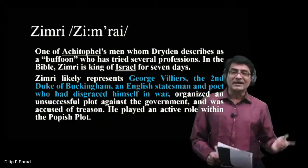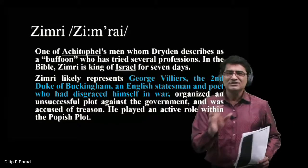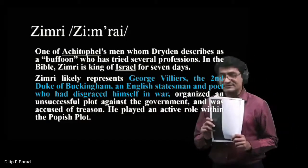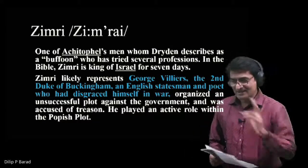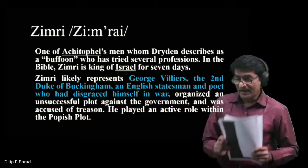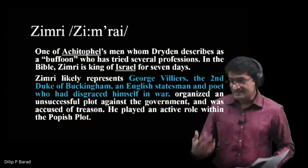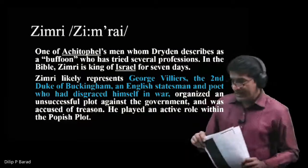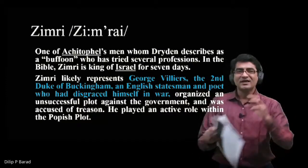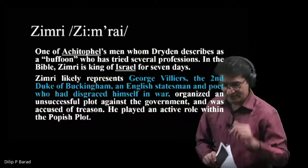Zimri is one of Achitophel's men, described by Dryden as a buffoon who has tried several professions. In the Bible, Zimri is king of Israel for only seven days. Zimri likely represents George Villiers, the second Duke of Buckingham — an English statesman and poet who had disgraced himself in war, organized an unsuccessful plot against the government, and was accused of treason. He played an active role in the Popish Plot and Achitophel's schemes.